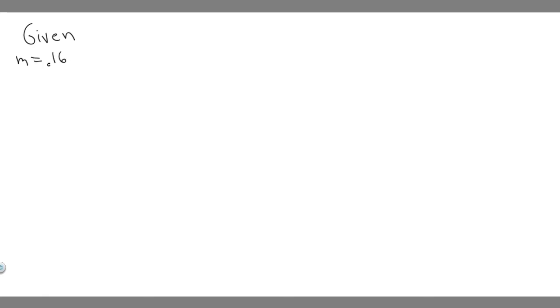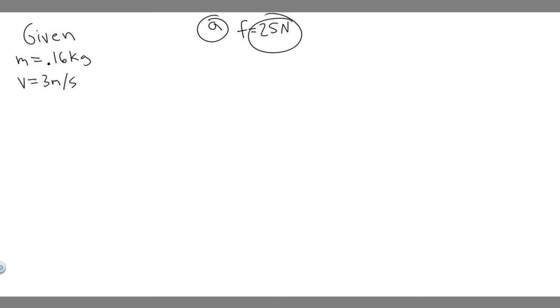There are two parts to this problem, but let's write down what we're given first. The puck has a mass of 0.16 kg, and it's moving on a frictionless surface. For Part A, the initial velocity is 3 meters per second to the right — that's the same for both parts. For Part A, there's a force of 25 newtons directed to the right, applied for a time of 0.05 seconds.